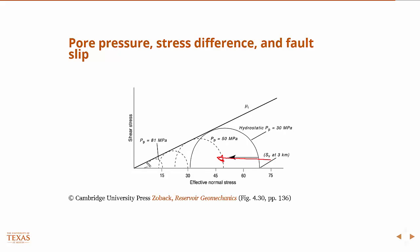In the effective stress framework, this is effective normal stress. If I increase the pore pressure, I'm shrinking the Mohr circle.